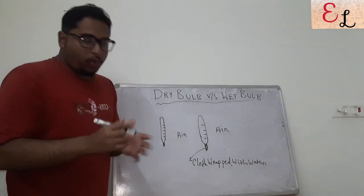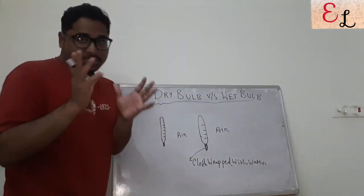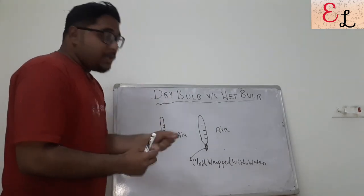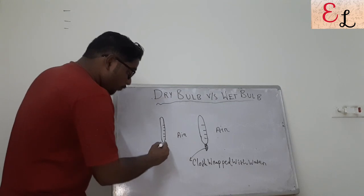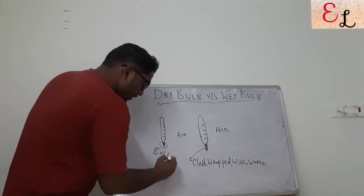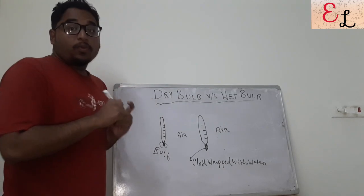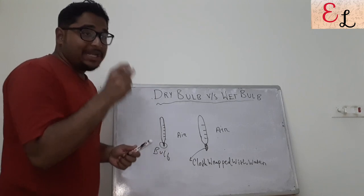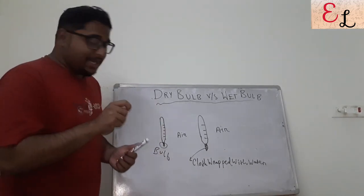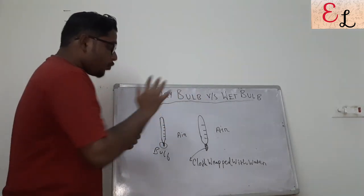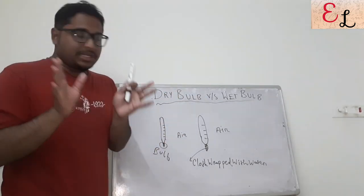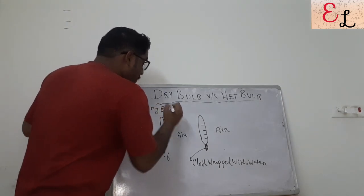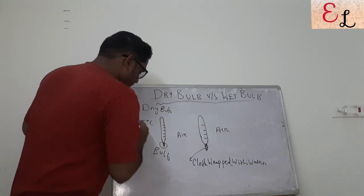Talking about dry bulb temperature straight away — as the name suggests, it is the temperature measured by keeping the bulb of the thermometer exposed to the atmosphere without anything attached to it. It is completely dry — no moisture, no layer of water, no liquid attached to it. Just a dry bulb exposed to atmosphere measuring the temperature.